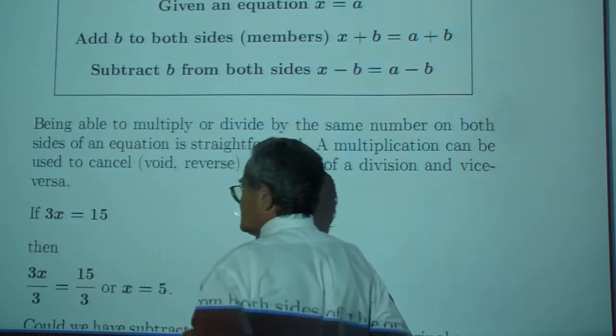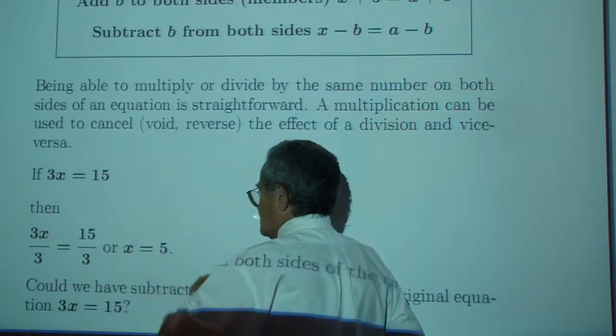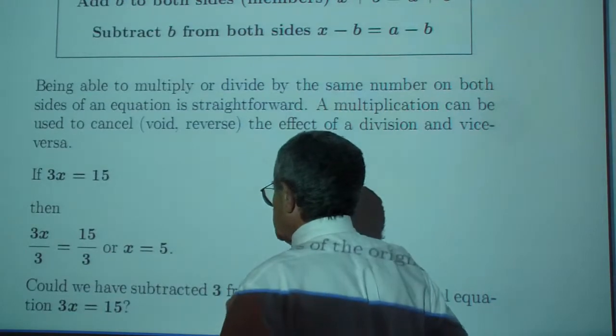If you have 3X equals 15, then 3X over 3 equals 15 over 3, or X equals 5.